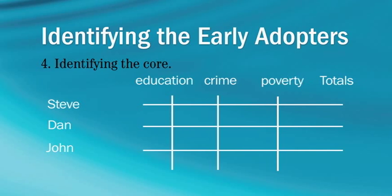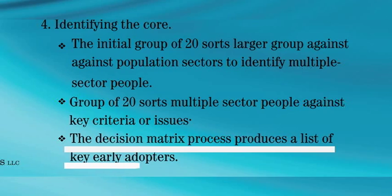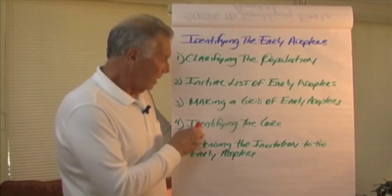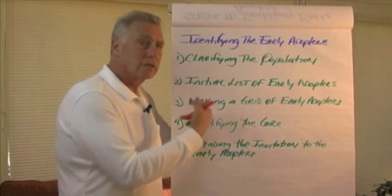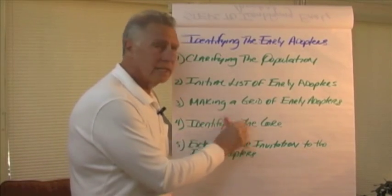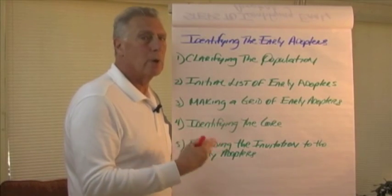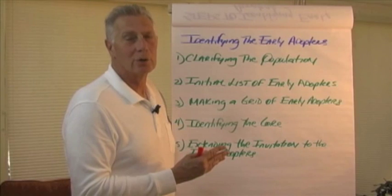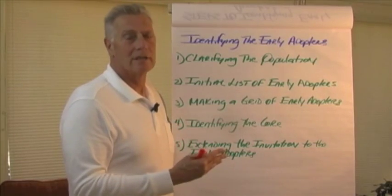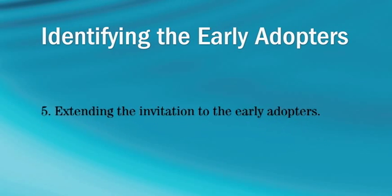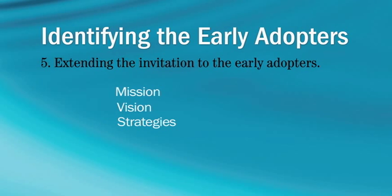From that group, you do the decision matrix — which is covered in other video blogs on my website — and you end up weighting the people in terms of how connected they are to each of those issues. Out of that process falls, through a qualitative but objective process, the most important early adopters across your entire population group. In a simple order, you have identification of those key connectors — that three to five percent of people — that you can then invite into a process to design the project, the mission, the vision, and the strategies about how to approach this issue.